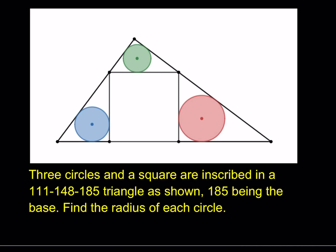Hello everyone, in this video we're going to be solving a geometry puzzle. Three circles and a square are inscribed in a 111, 148, and 185 triangle as shown, 185 being the base. Find the radius of each circle.